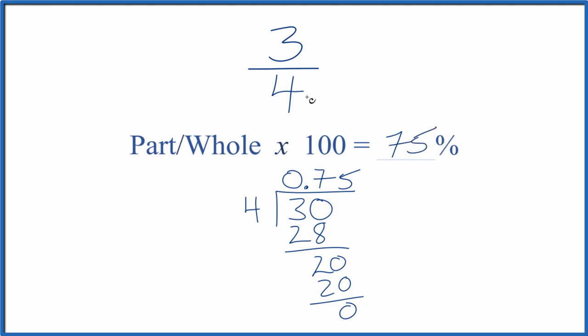So 3 fourths, the fraction, written as a percent, it's 75%. And we did that, divided 3 by 4, multiplied by 100.